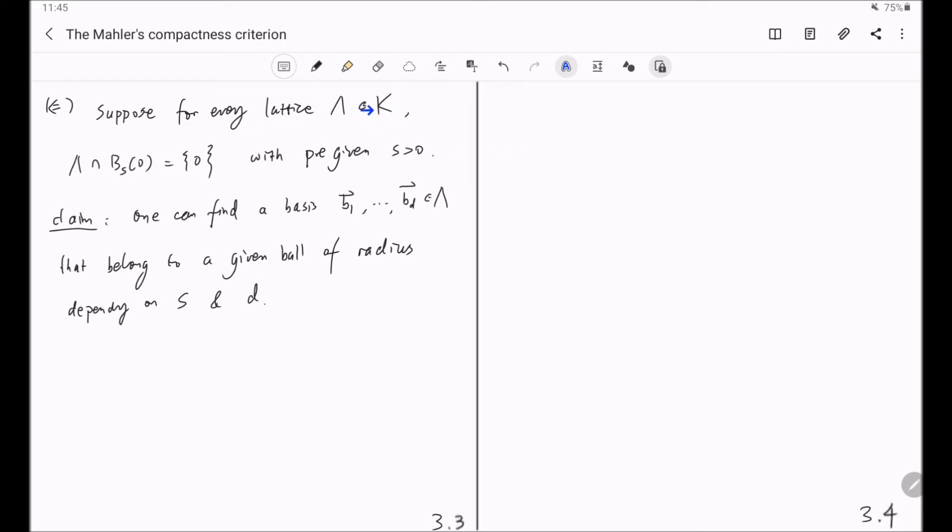We know by assumption that the space has to be bounded away from 0. In particular, any element here should have norm greater or equal to s. But now we are claiming that those space elements as vectors cannot be too long. It has to also be bounded within a given ball of radius depending on s and d. And we shall do this in a couple of steps and by induction.